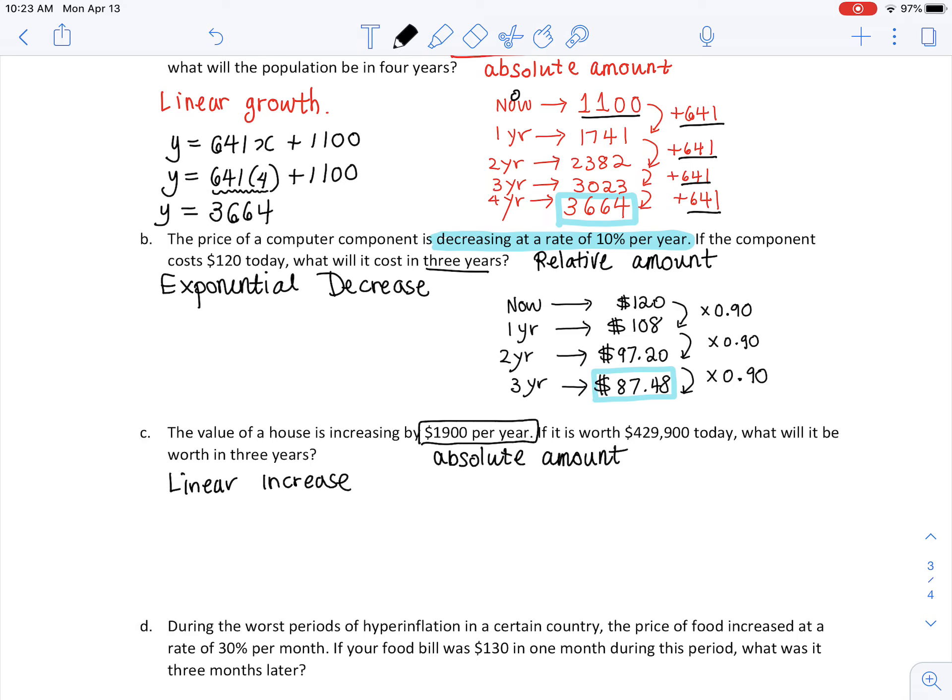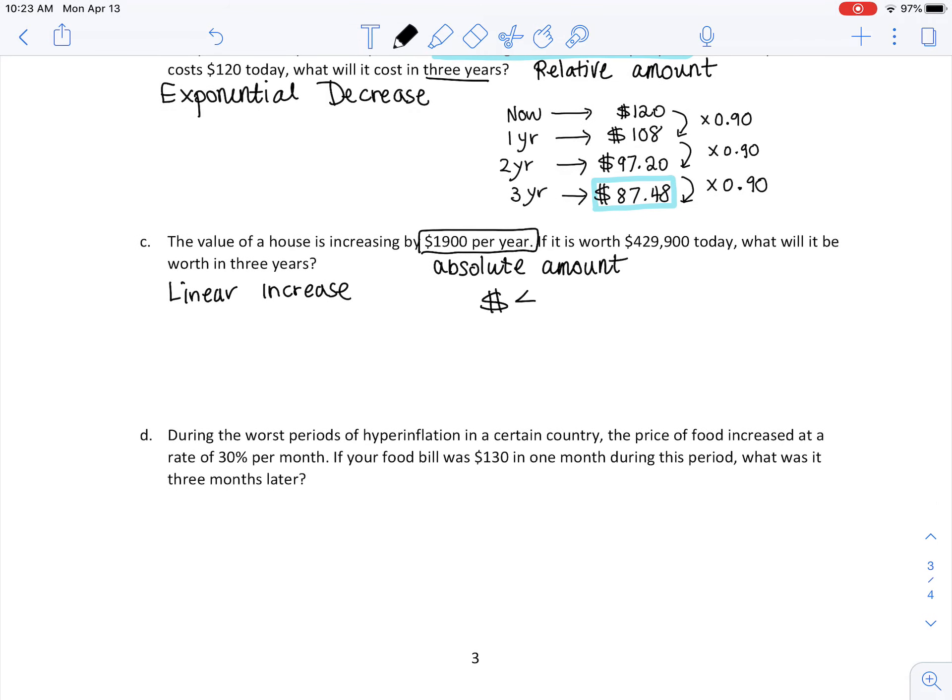If we have a house that is $429,900 today, what will it be worth in three years? This is year zero. Let's do that simple adding. After one year we simply add $1,900 to that original amount, which gives us $431,800. Year two, I just add the same amount $1,900, I will get $433,700. And the very last one that we wanted, worth in three years, add another $1,900, we will get $435,600.